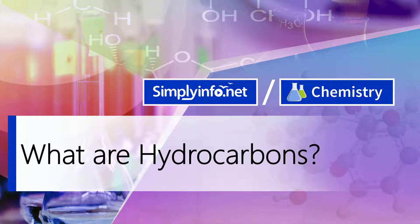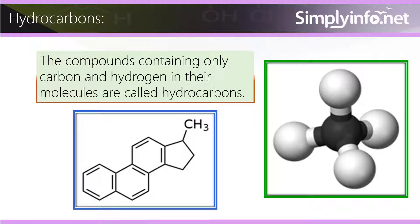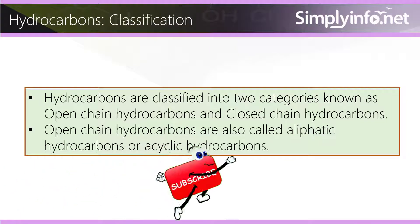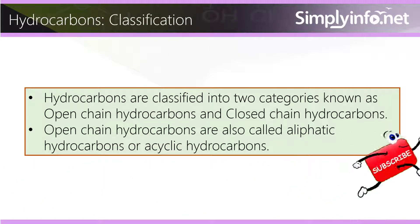What are hydrocarbons? Compounds containing only carbon and hydrogen in their molecules are called hydrocarbons. Hydrocarbons are classified into two categories: open chain hydrocarbons and closed chain hydrocarbons. Open chain hydrocarbons are also called aliphatic hydrocarbons or acyclic hydrocarbons.